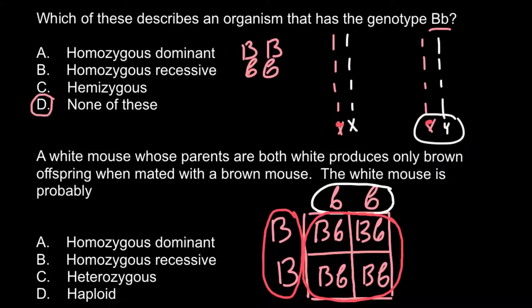And the correct answer would be, once again in our question we are looking for the genotype of the white mice that is going to be homozygous recessive. So our choice would be answer B.